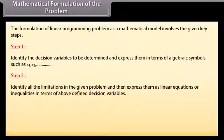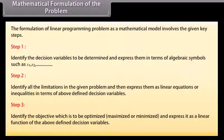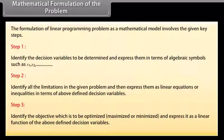Mathematical formulation of the problem. The formulation of a linear programming problem as a mathematical model involves the following key steps. Step 1: Identify the decision variables to be determined and express them in terms of algebraic symbols such as X1, X2 and so on. Step 2: Identify all limitations in the given problem and express them as linear equations or inequalities in terms of the defined decision variables. Step 3: Identify the objective which is to be optimized — maximized or minimized — and express it as a linear function of the defined decision variables.